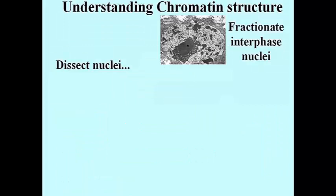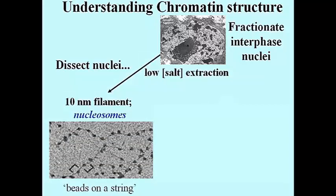So here's how we come to understand chromatin structure. I have a photograph here of a nucleus in a cell, and if you fractionate the nuclei — treating them with a low salt concentration and then looking at what you get in the electron microscope — lo and behold, you see 10 nanometer filaments. The 10 nanometers, by the way, refers to the diameter of the little beads, and the beads are those nucleosomes we talked about.